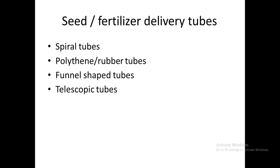There are different types of delivery tubes for conveying seeds and fertilizer from the box to the outlet: spiral tubes, polythene or rubber tubes, funnel-shaped tubes, and telescopic tubes. Telescopic tubes are rigid and can be adjusted in length, moving only in one direction.